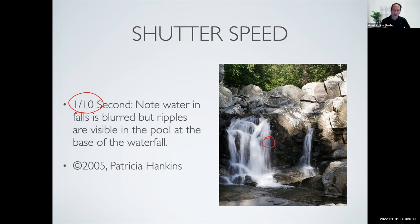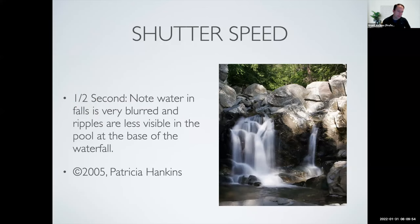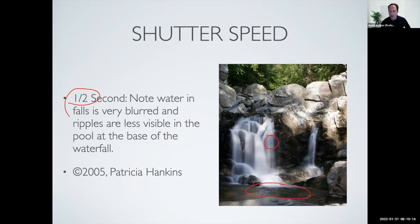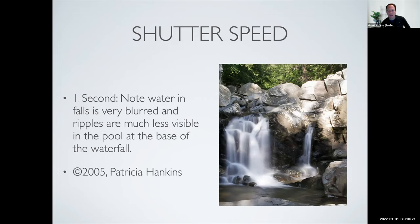Continuing with the waterfall example: at half a second, the waterfall is starting to get almost wispy because more and more of it is being captured as motion blur. You can also start to see the individual ripples in the pool at the bottom starting to smooth out. At one full second, the waterfall in the same area is getting even lighter and wispier, and the ripples at the bottom are even smoother. So we're progressing our way through it.